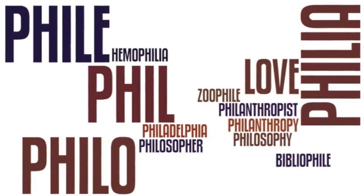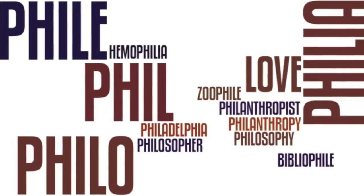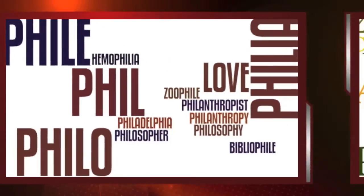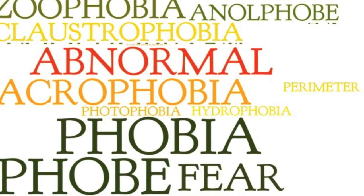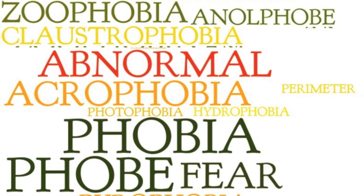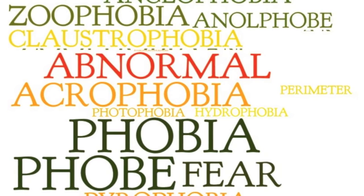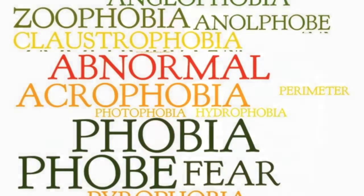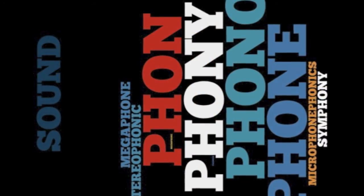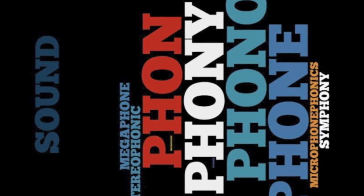Phile and philia mean love, such as philanthropist, philanthropy, philosophy, bibliophile, philosopher, and hemophilia. Phobia means fear, as an abnormal one, like acrophobia, arachnophobia, claustrophobia, or even an anglophobe. And phone or phony means sound, such as in megaphone, telephonic, or symphony.